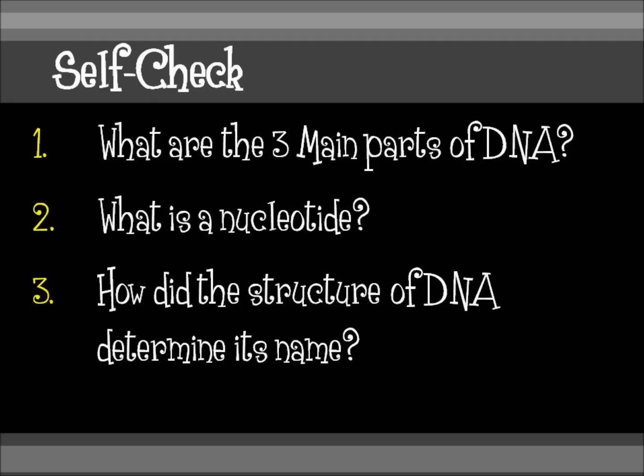Now just one last thing. Remember those three questions that were on the first slide — here they are again. Do a quick self-check to see if you were paying attention, and go back if you need to review. Your questions were: number one, what are the three main parts of DNA? Two, what is a nucleotide? And three, how did the structure of DNA determine its name? Take just a moment to think over your answers, and in just a few more seconds you will see the correct answers at the end of this show.